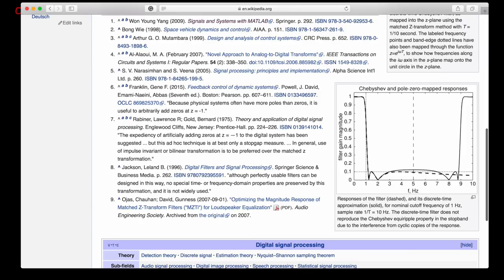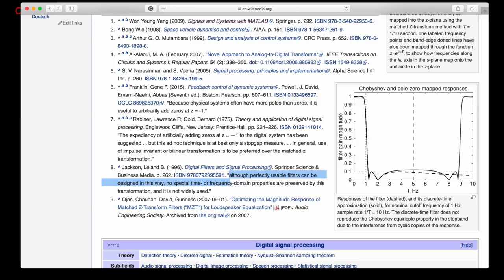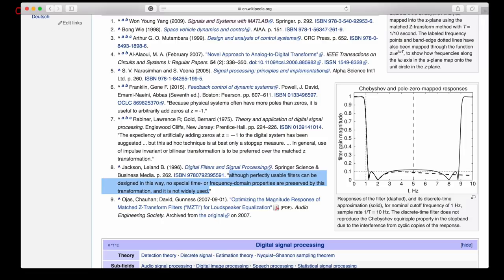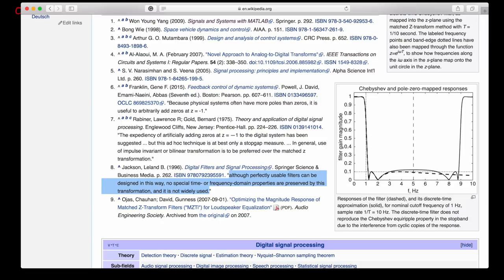If you scroll down to the reference section, you can see that Rabiner and Gold state that this ad hoc technique is at best only a stopgap measure. And in general the use of impulse invariant or bilinear transformation is preferred. And then Jackson states although perfectly usable filters can be designed in this way, no special time or frequency domain properties are preserved, and it's not widely used. That sort of takes the momentum from this video.